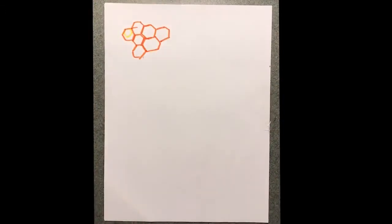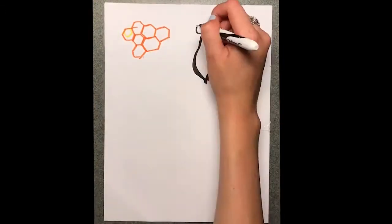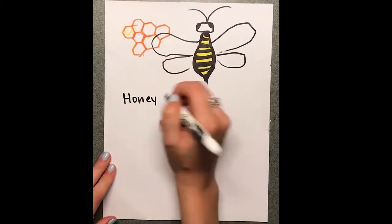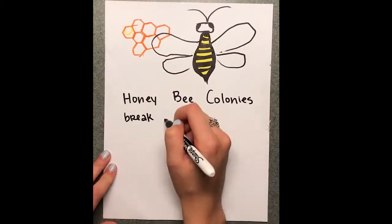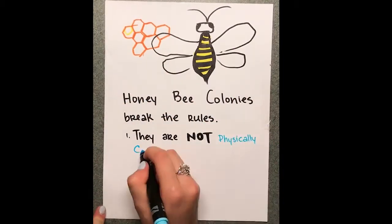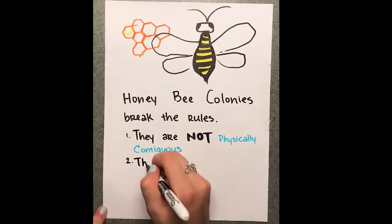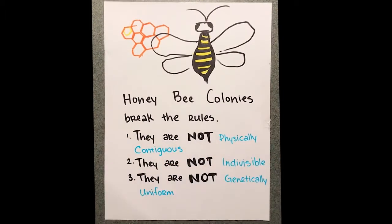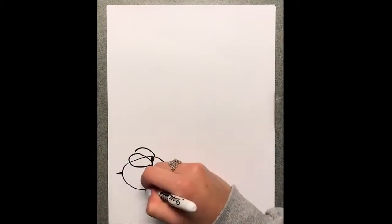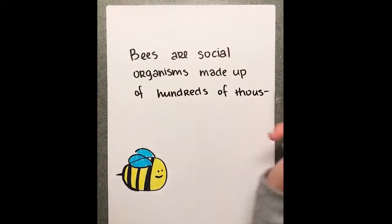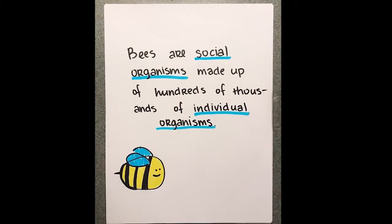One type of organism we can look at that proves to be an exception to not one, but many of the criteria of the old definition, is honeybee colonies, which are neither physically contiguous, nor are they indivisible, or even genetically uniform, being that they are social organisms made up of hundreds of thousands of individual organisms.